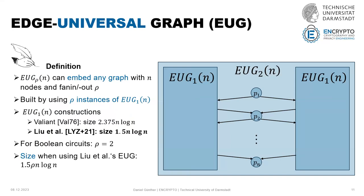We have the spread of these edge-universal graph constructions. The lower bound is basically on how we can build such an edge-universal graph construction such that we can really find these paths. Exactly — so if we want to find a better bound on this, in theory it should be possible, but then we need to go outside of this framework.